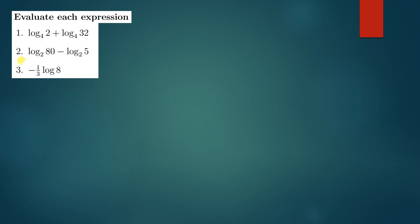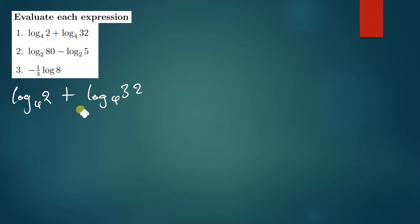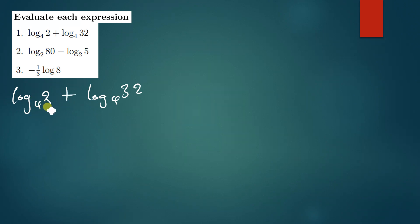The first question we have is log 2 base 4, plus log 32 base 4. How do we simplify this? Is there a way to reduce the first term? If not, can we reduce the second term to look like the first term?